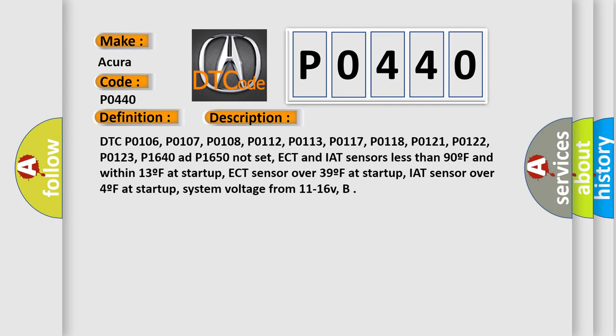ECT and IAT sensors less than 90°F and within 13°F at startup. ECT sensor over 39°F at startup. IAT sensor over 4°F at startup. System voltage from 11 to 16V.